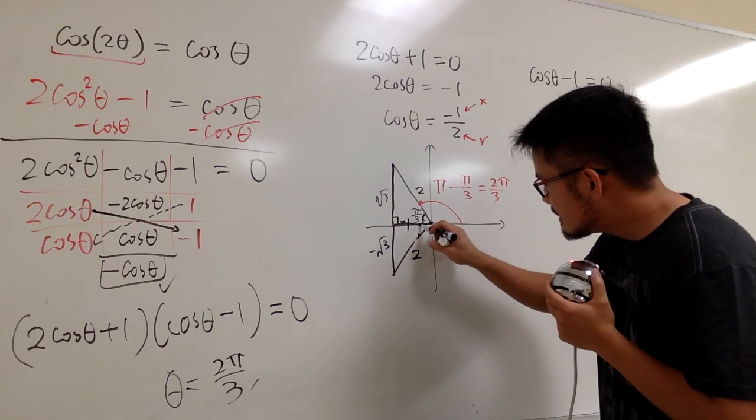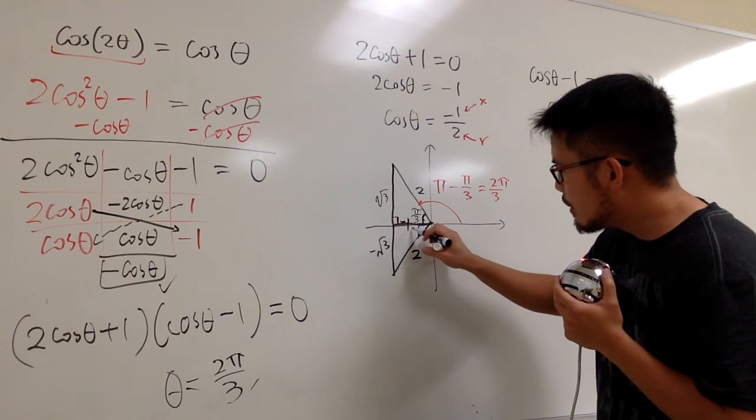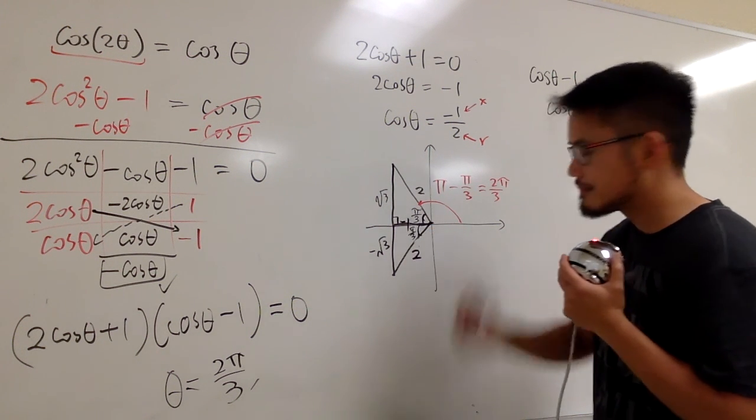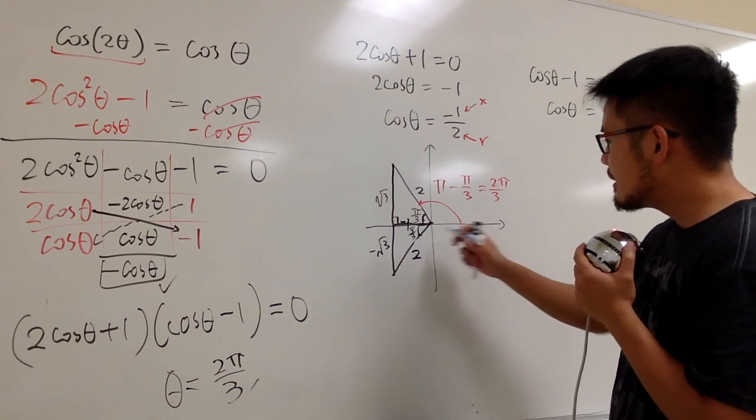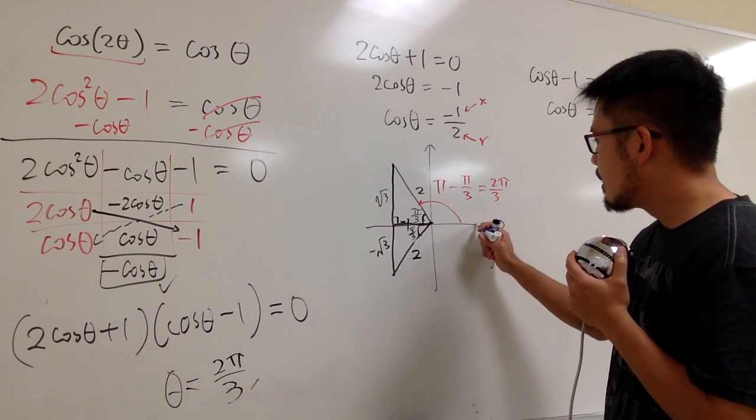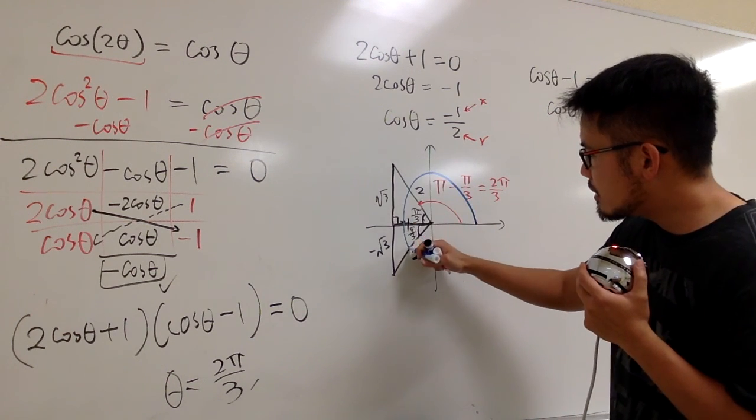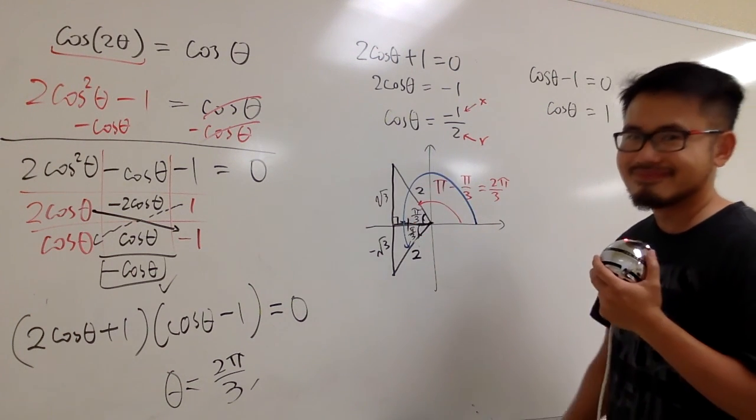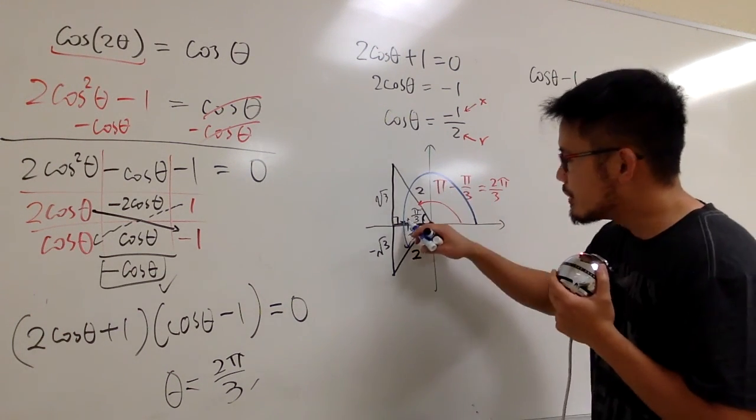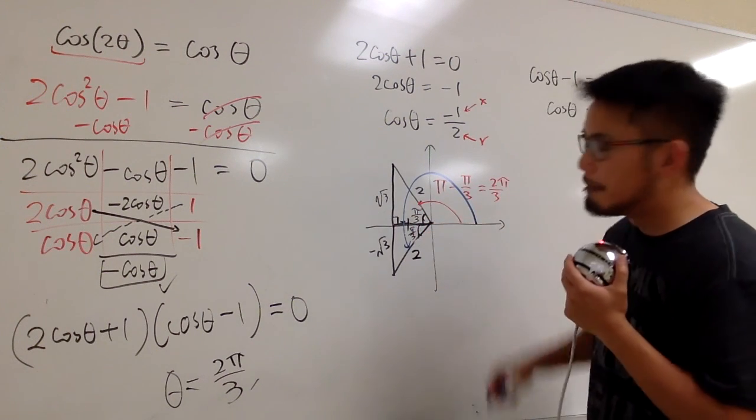I still have this angle. And this is still π over 3. But at this time, I'm going to calculate the angle from here all the way to here. The blue one. The top portion is π. And then, we go down π over 3, right?